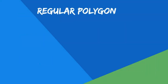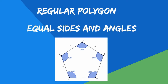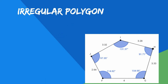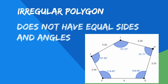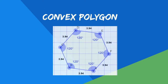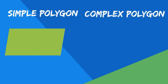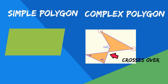There are several types of polygons. A regular polygon has equal lines and angles. An irregular polygon does not have equal lines and angles. A concave polygon has one angle greater than 180 degrees. A convex polygon does not have any internal angles greater than 180 degrees. A simple polygon does not have any lines that cross over. A complex polygon has at least one line that crosses over itself.